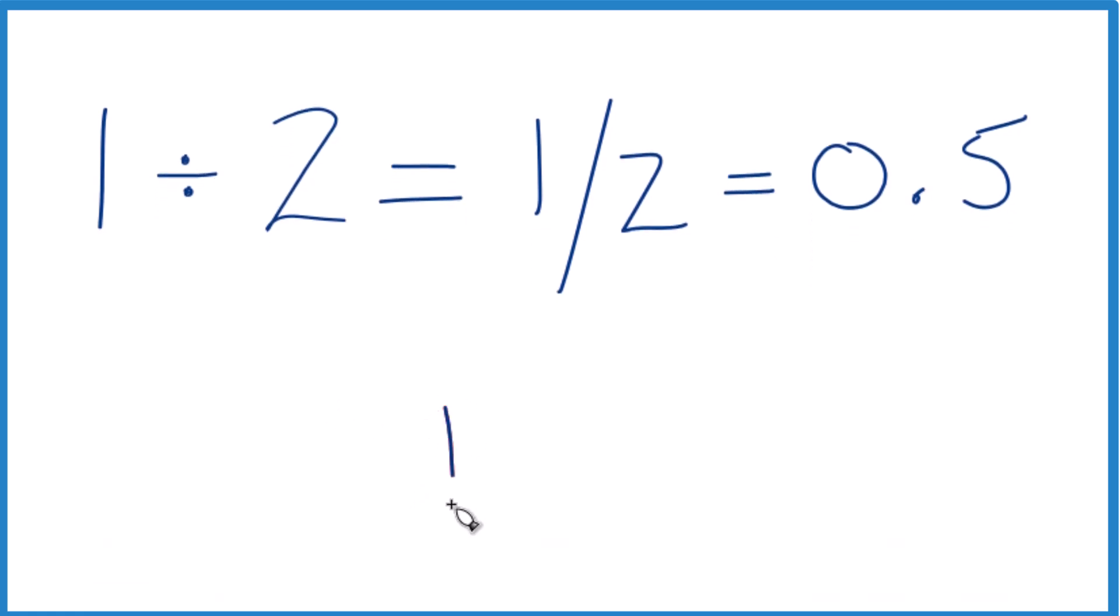You could say you have 1, and you want to know how many times 2 goes into 1. 2 doesn't go into 1, so if we put a 0 and a decimal point here, we could call this 10, move over 1.